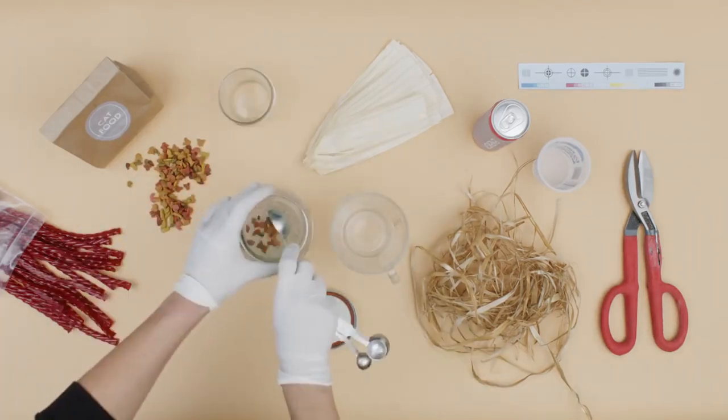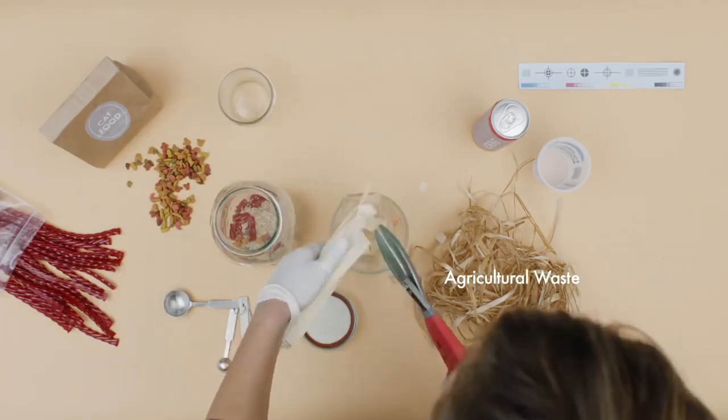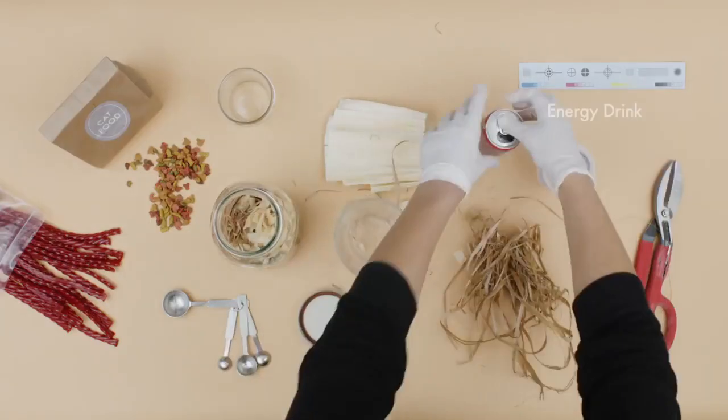Step four, prepare the substrate for mushroom expansion. A mixture of agricultural waste, sugar, cat food, and energy drink.